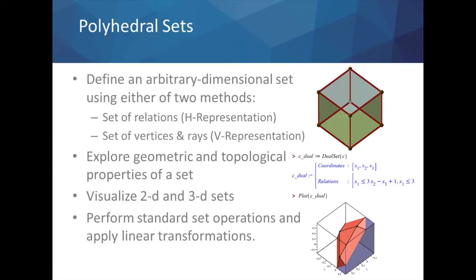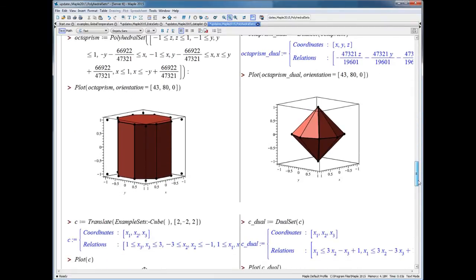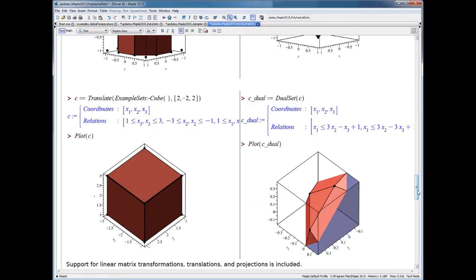One of our new offerings in the domain of computation is the polyhedral sets package. This is a powerful new package for defining an arbitrary dimensional set using either of two methods: a system of relations, which we call the H representation, or a set of vertices and rays, which we call the V representation. After building a polyhedral set, you can explore its geometric and topological properties, compute volumes and surface areas, visualize two-dimensional and three-dimensional polyhedral sets, and perform standard set operations such as linear transformations. Here we can see how we build polyhedral sets from a system of relations, visualize these sets, and perform computations such as a geometric transformation of one set and computing the dual of another.